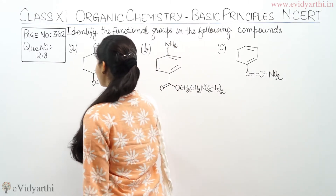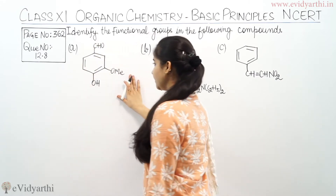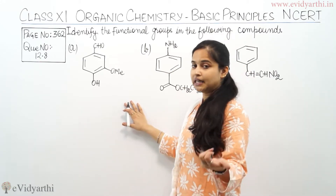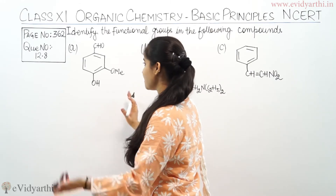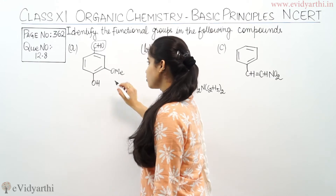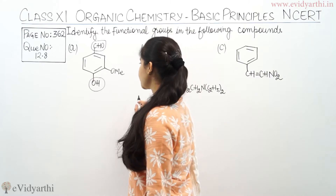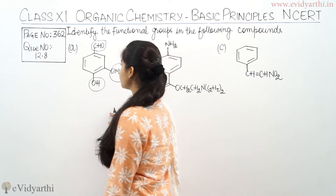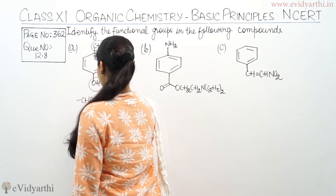This is part one of question number 8. This is the compound given to me, and I need to identify the functional group. The functional group which I am seeing is hydroxyl, that means OH. And the other functional group which I am seeing is OMe, which is methoxy. And CHO which I am saying is aldehyde.